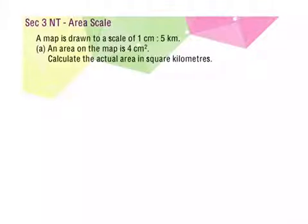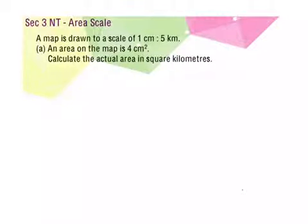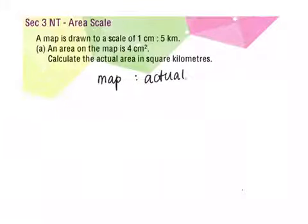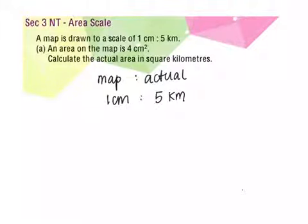Area scale. From an area scale, we will be able to calculate actual area and area on the map. Before we do that, we need to take a look at the scale that we are given. For example, a map is drawn to a scale of 1 cm to 5 km. So we write map and actual, where the map is 1 cm and actual is 5 km. The question says the area on the map is 4 cm², which means it is area scale.